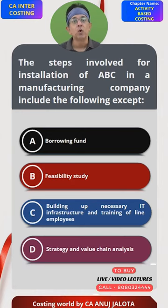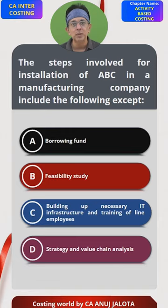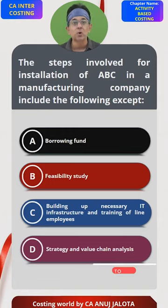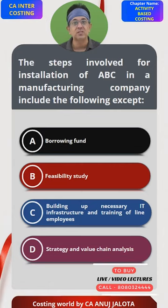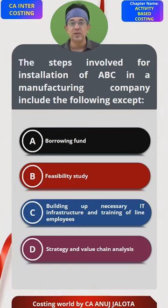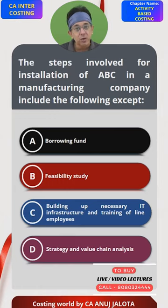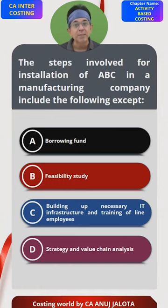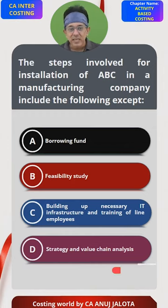Second, if you want to follow activity-based costing, you should be able to generate a large amount of data. For example, for ordering cost you will require number of orders, so your IT systems have to ensure you capture number of orders. Same way, you capture number of setups, research and development hours, number of machine hours — all those things are required. For that, you will also have to train your employees.